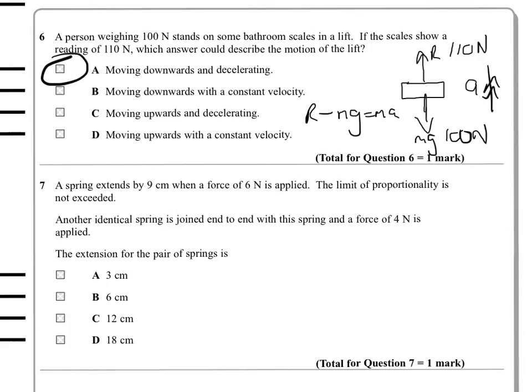This says another identical spring is joined end to end with this spring, and a force of 4 newtons is applied. Well, if there's 1.5 centimetres for every newton, then 4 newtons is going to create an extension of 1.5 times 4, which is 6 centimetres. The problem is that they are joined end to end. And that means that both springs will feel a 4 newton force on them. So they will both extend by 6 centimetres, giving you a total extension of 12.